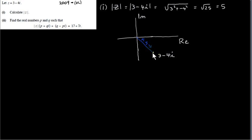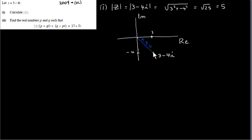Here is a picture of the complex number 3 minus 4i. We go to 3 on the real axis and minus 4 on the imaginary axis. The distance of the complex number to the origin is 5. That's the modulus — the distance of the complex number to the origin.